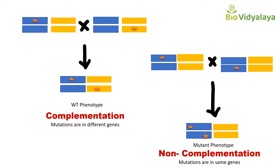Here you can see these are the two mutants — one mutant and another mutant. We are mating them and getting a wild type phenotype. If we get a wild type phenotype, we can say that the mutations are present in two different genes and they complement each other — there is complementation. If the mutations are in the same gene, we will get a mutant phenotype in F1; that is non-complementation.